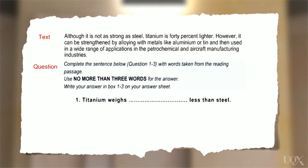Titanium weighs less than steel. Now look at the first sentence in the text. Although it is not as strong as steel, titanium is 40% lighter. Which idea is the best fit? Let's try each one.